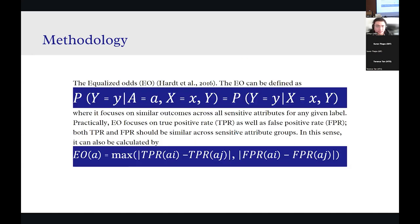So as for the fairness analysis, we have adopted the equalized odds as our matrix here, which by definition focuses on similar outcome across all sensitive attributes for any given labels. Practically and equivalently, based on the study of Hardt in 2016, equalized odds can also be regarded as focused on the true positive rate and the false positive rate should be similar across sensitive attribute groups. In these cases, we can calculate that in lower formulas, which takes the maximum differences of the true positive rate and the differences of the false positive rate between different groups.